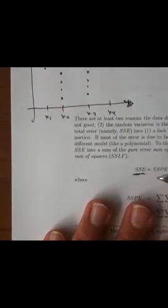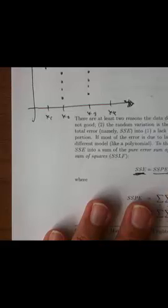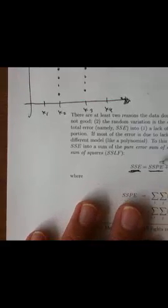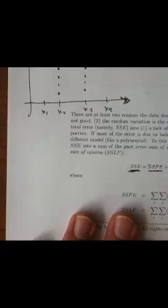Now it turns out I can partition the sum of squared errors, or the error sum of squares, as these two quantities, which we'll call the pure error sum of squares and the lack of fit sum of squares. These are the formulas for them down here. Let's see if we can make these things pop a little bit, see if we can make them make sense.